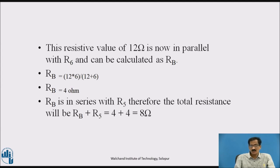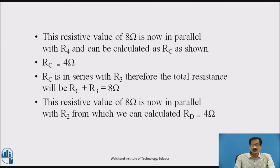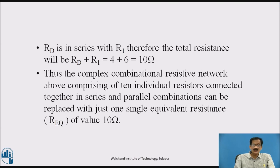RB in series with R5 gives total resistance RB plus R5 equals 4 plus 4 equals 8 ohm. This 8 ohm in parallel with R4 gives RC equals 4 ohm. RC in series with R3 gives 8 ohm. This 8 ohm in parallel with R2 gives RD equals 4 ohm. RD in series with R1 gives the total resistance RD plus R1 equals 4 plus 6 equals 10 ohm. Thus the complex network of 10 resistors is replaced by a single equivalent resistance RAB of 10 ohm.